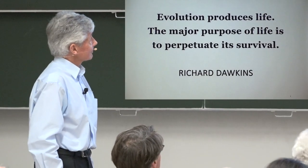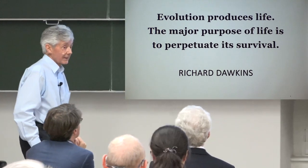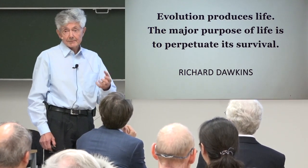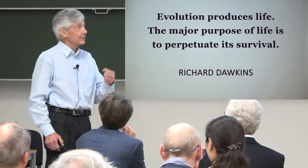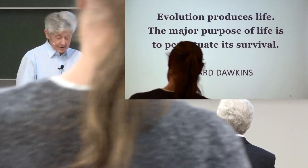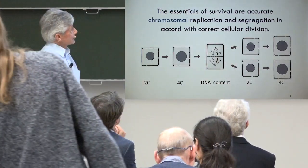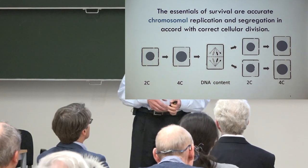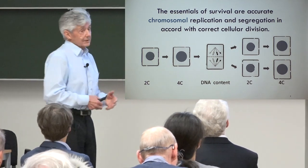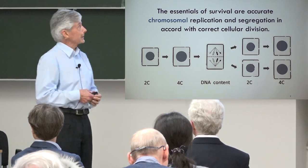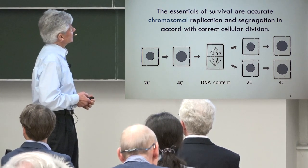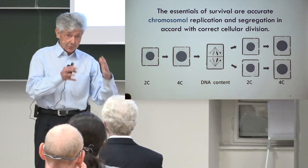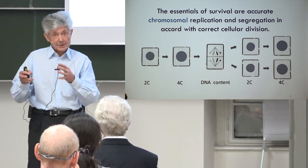Evolution produces life. The major purpose of life is to perpetuate its survival. It's a deterministic view of life, an emergent view of life — a quality that began to exist with life. This slide summarizes what it means to survive: the genome has been transmitted in a correct way.